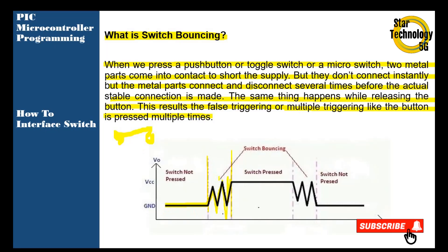When we press the switch, the switch will connect and disconnect several times — just like the switch is being pressed many times — and after that it gets stable. When we release the switch, it again connects and disconnects before becoming stable. That pulsing on both the opening and closing side is what we call switch bouncing.